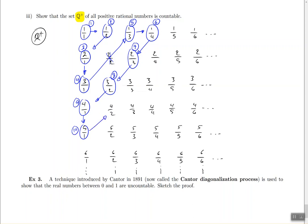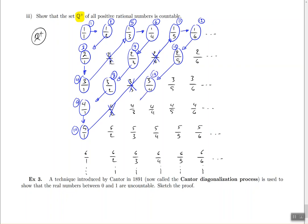Going back across: 4 over 2 is the same as 2, which is number 3 in the list — ignore it. 3 over 3 is the same as 1 — ignore it. 2 over 4 reduces to 1 half, identical to number 2 — ignore it. So from 5 over 1, which is the 10th number, I jump straight to 1 fifth, which is number 11. Moving across once gives number 12. Then going back down: 2 fifths is number 13, 3 over 4 is number 14, the next is number 15, 5 over 2 is number 16, and the following is number 17.